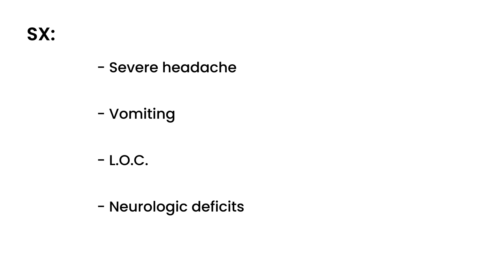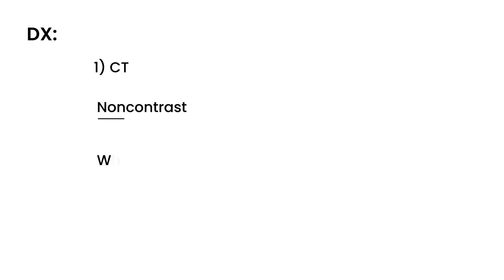How is this diagnosed? There are a couple of ways. The first way is a CT — in particular, a non-contrast CT. Why non-contrast? Because contrast on a CT appears white, and blood on a CT also appears white. So if you did a CT with contrast, you wouldn't be able to tell what's the contrast and what's the blood. So you do a non-contrast CT.